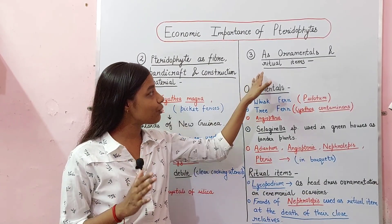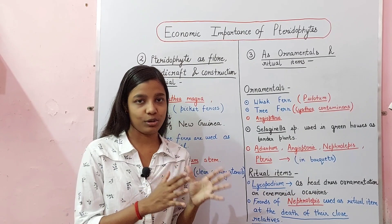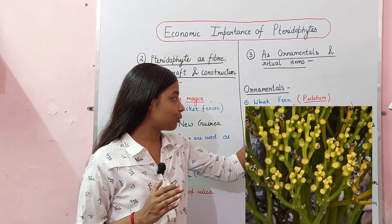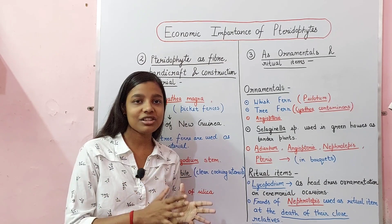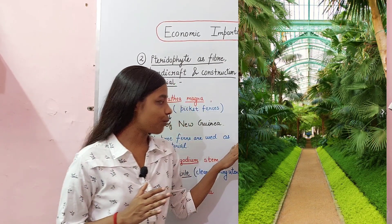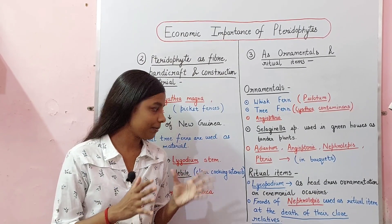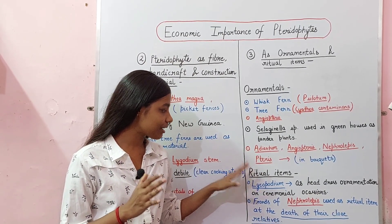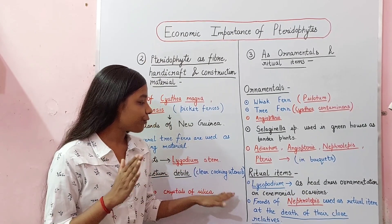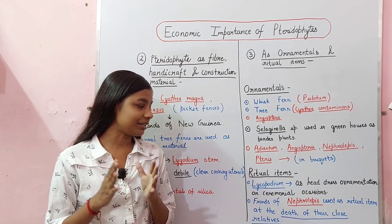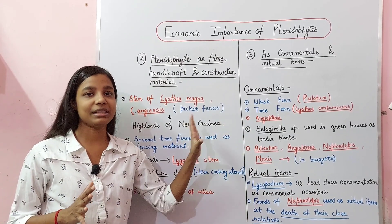Pteridophytes are also used as ornamentals and ritual items. Species used for decorative purposes include the whisk fern Psilotum, the tree fern Cyathea and Angiopteris. Selaginella species are used in greenhouses as border plants, and Adiantum, Angiopteris, Nephrolepis, and Pteris are used in making corsages. For ritual items, Lycopodium is used in headdress ornamentation for ceremonial occasions, and fronds of Nephrolepis are used as a ritual item at the death of close relatives.